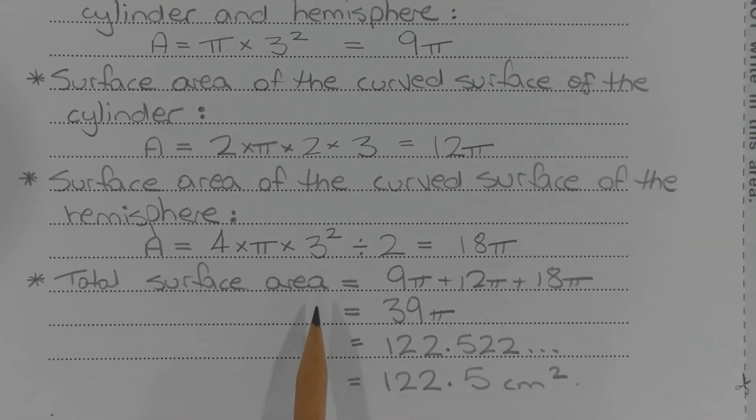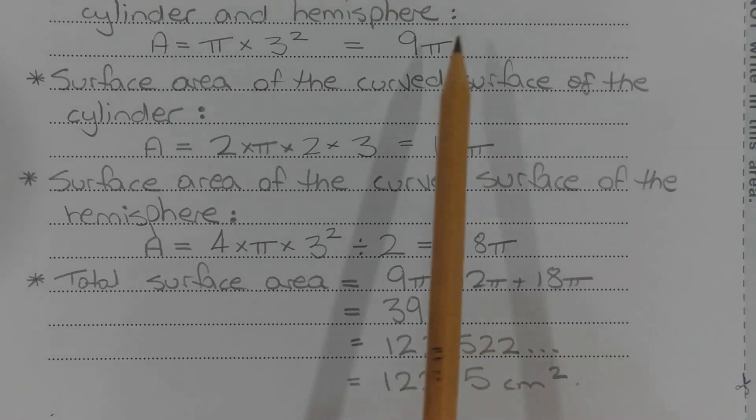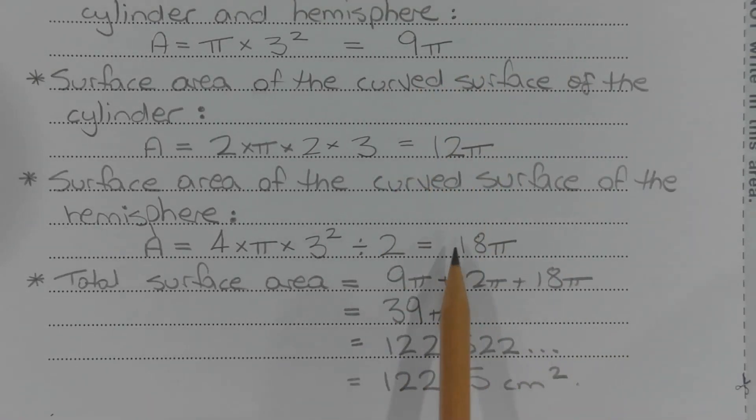To get the total surface area, we'll add up the three subtotals that we have: 9π plus 12π plus 18π, and that equals 39π, which equals 122.522 and so on, which rounds to 122.5 square centimeters, correct to one decimal place.